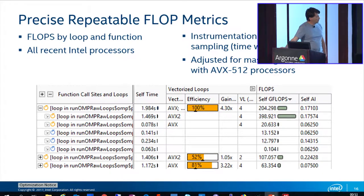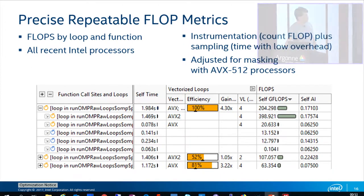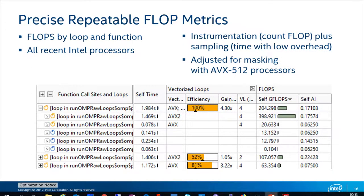Besides trip counts and call counts, this collection also provides repeatable FLOP metrics. They are reproducible no matter which processor you run on, because they are based on instrumentation — we calculate floating point operations exactly. You can also account for integer operations if your code uses them. Timing comes from the survey which is sampling-based, but floating point operations are exactly counted in the instrumentation collection. We also adjust floating point operations for masking instructions for AVX-512, because ineffective use of masking operations can reduce your floating point per second quite significantly.